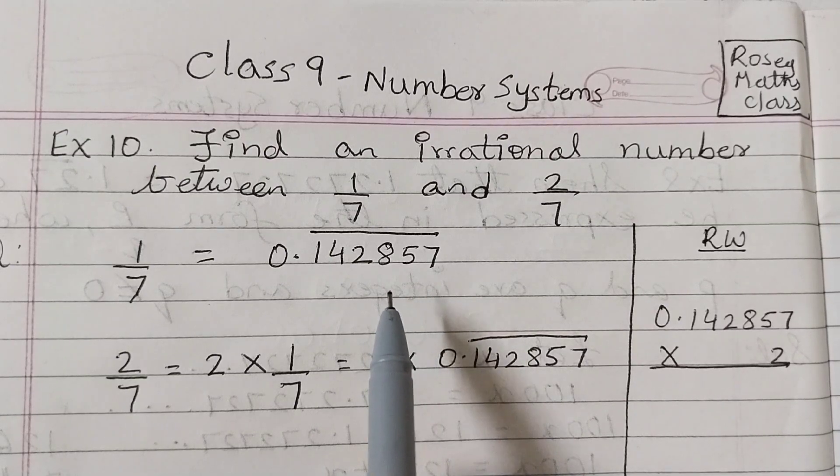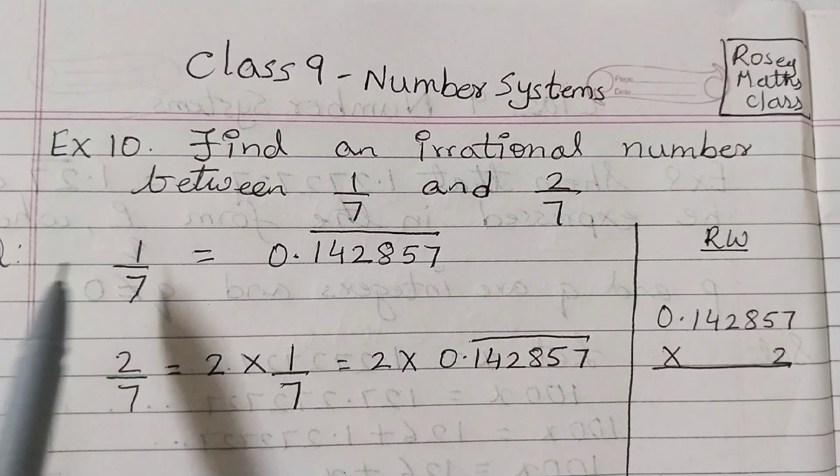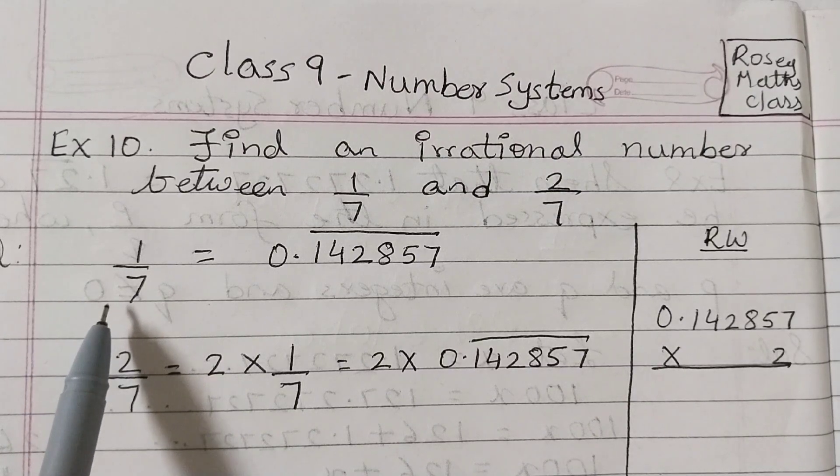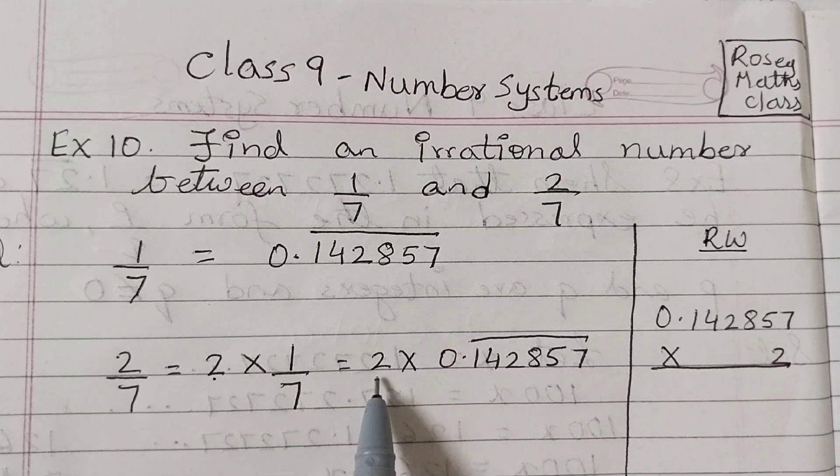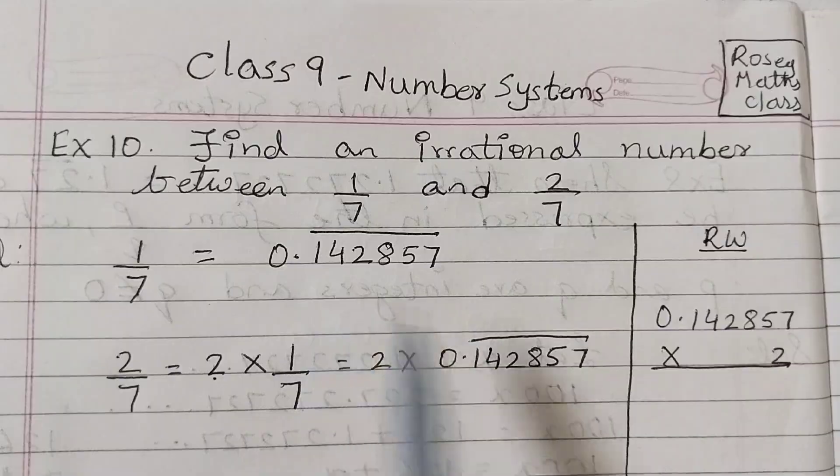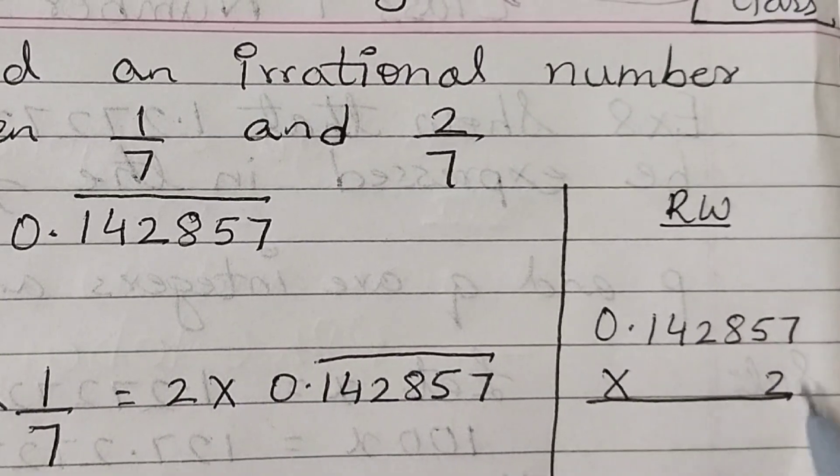So if you know 1 by 7 we can easily find out 2 by 7. 2 multiplied by 1 by 7 is 2 by 7, so 2 into this number. And when we multiply, this 7 to the 14, 1 5 to the 10, 11 8 to the 16, 17 2 to the 4, 5 4 to